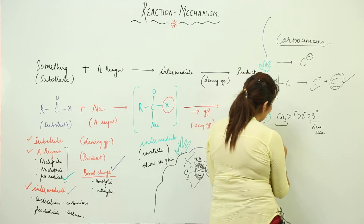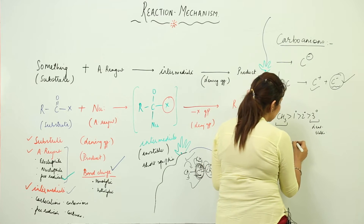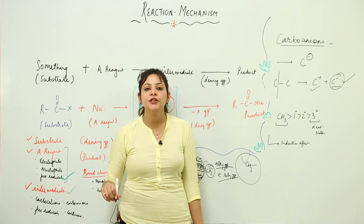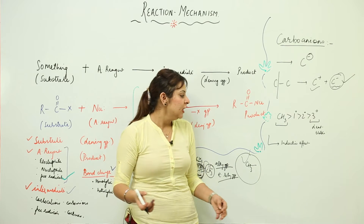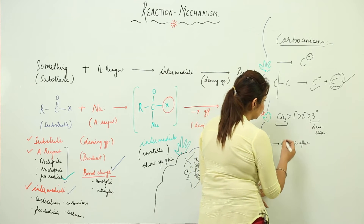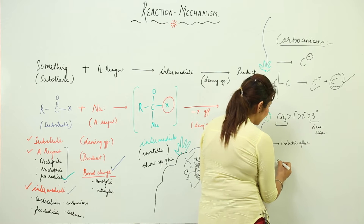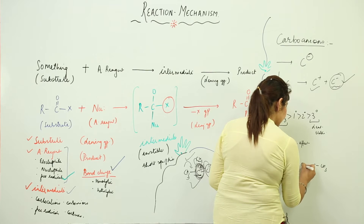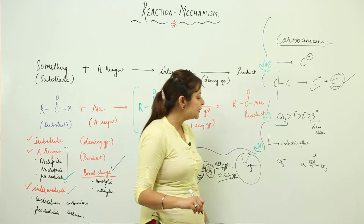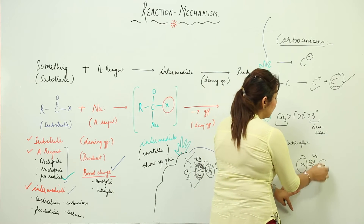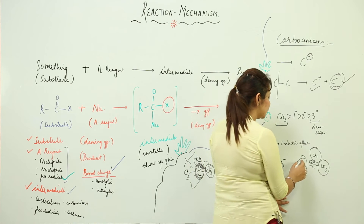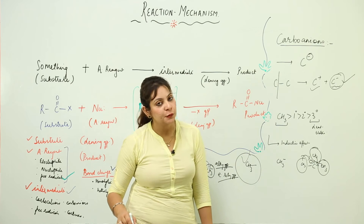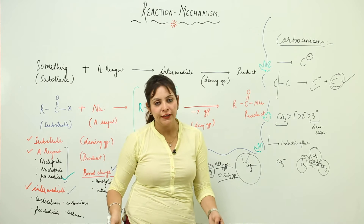Again, this can be explained on the basis of the inductive effect. As I already told you when we were discussing carbocations, alkyl groups show the +I effect — they have electron-releasing tendency. So what happens is, whenever they are attached to a carbanion — for example, suppose I have this structure and here is my carbanion — there are 3 methyl groups and we know they have electron-releasing tendency, so each can release an electron. This will actually not help in the dispersal of charge; rather, it will increase the magnitude of the negative charge.